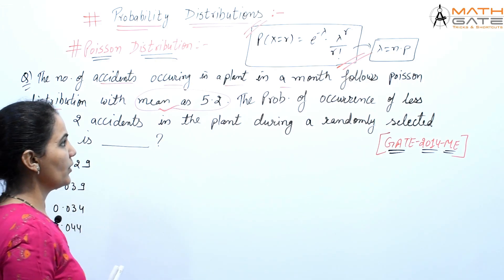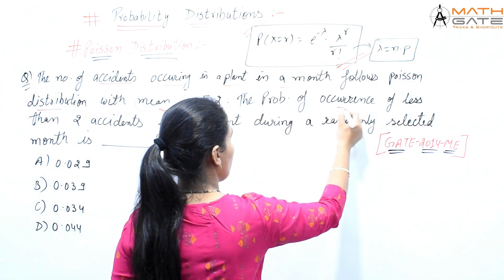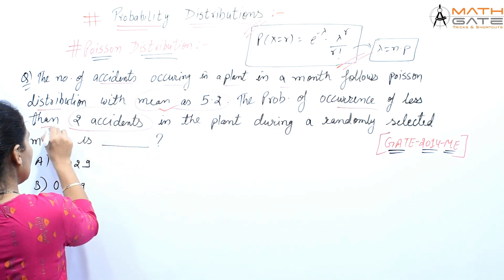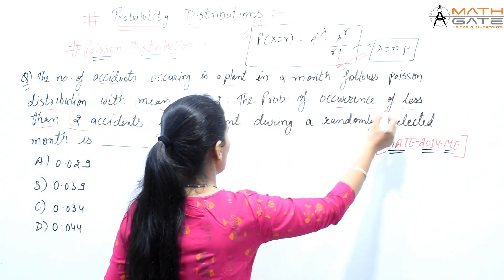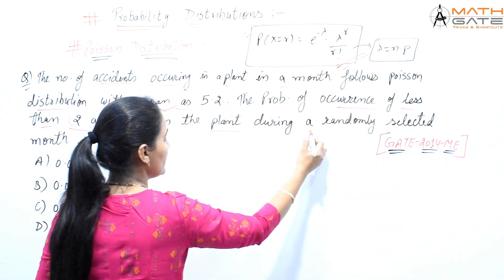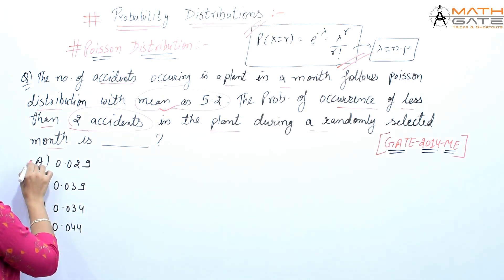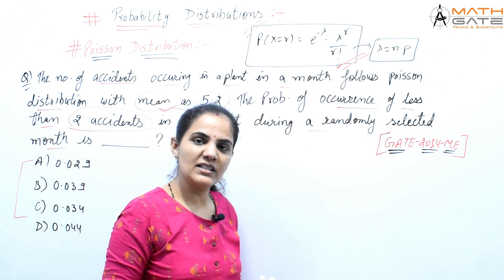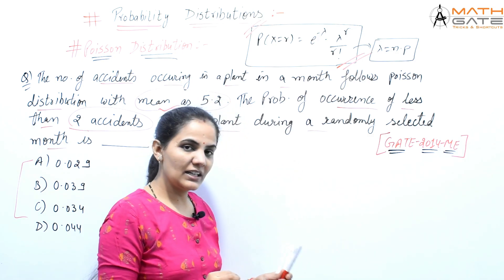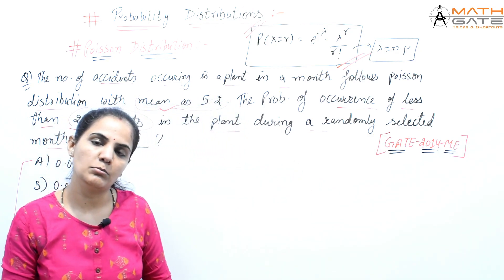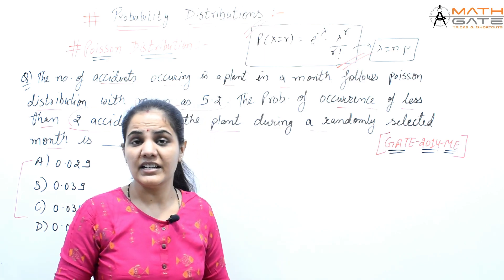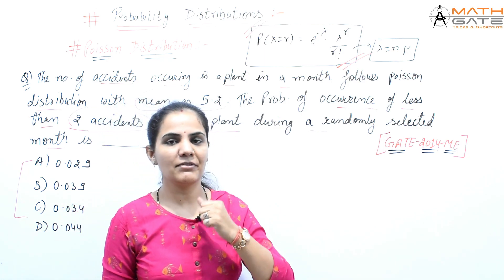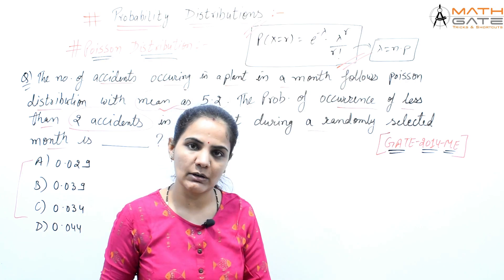We need to find the probability of occurrence of less than two accidents in the plant during a randomly selected month. The basic Poisson distribution formula is: probability at x equals r is e to the power minus lambda, times lambda to the power r, divided by factorial r, where r is the required number.